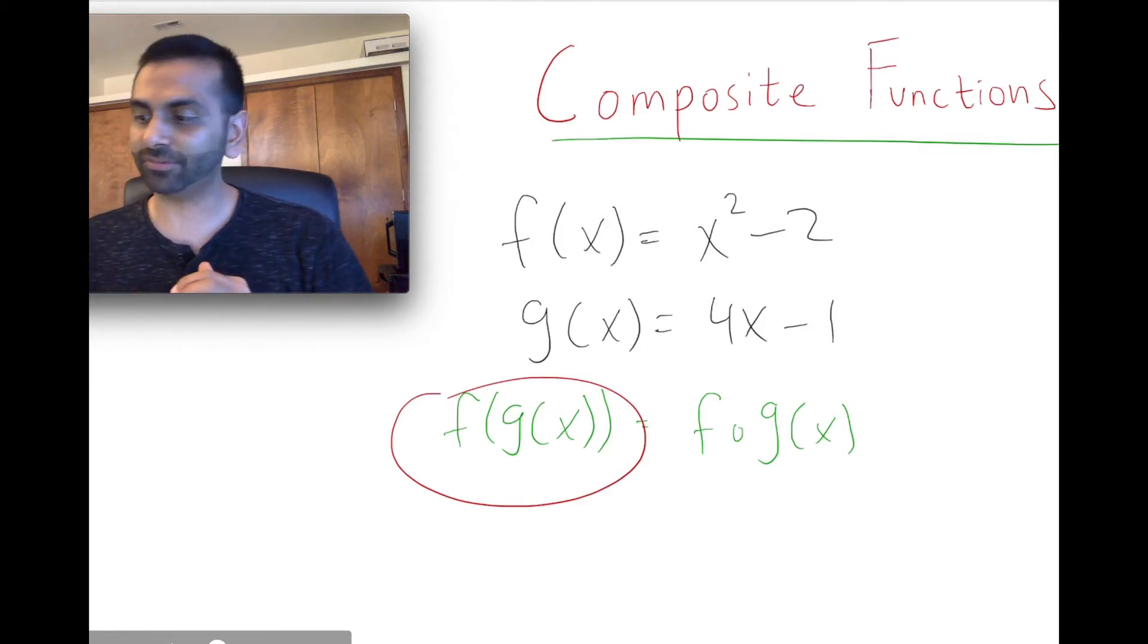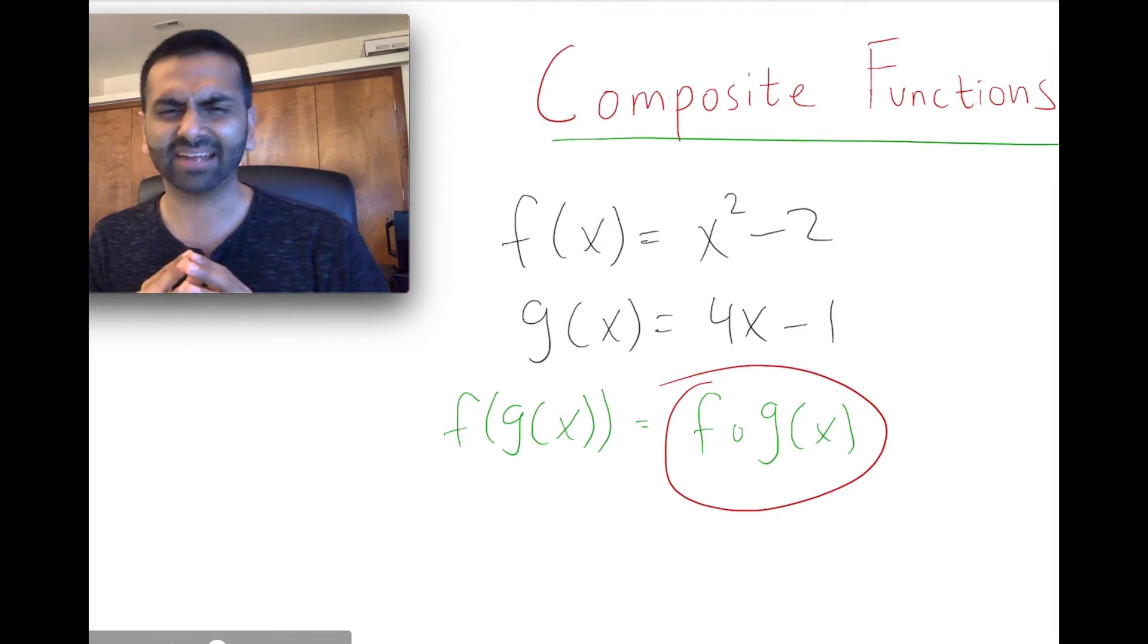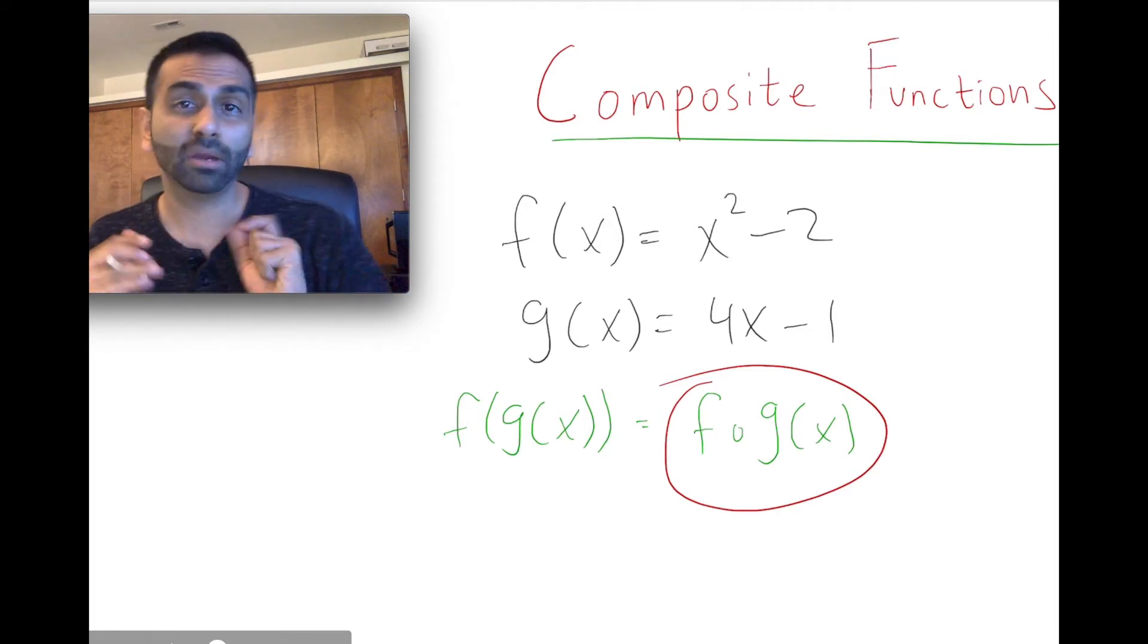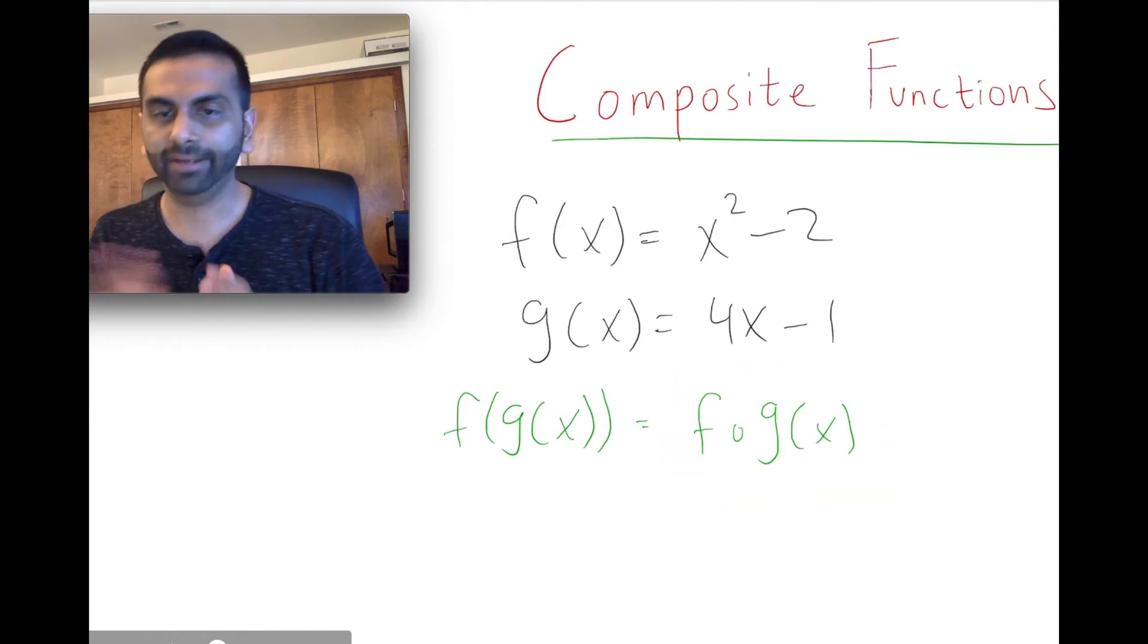Another notation for representing that is this. It looks like a dot in between. It's really tempting and confusing for people to think of that as f times g of x, but no, it's pronounced f of g of x.